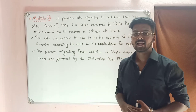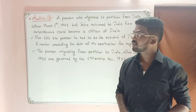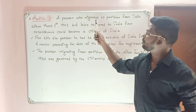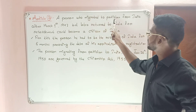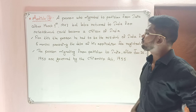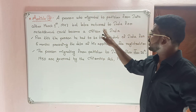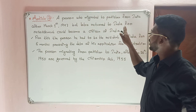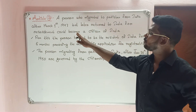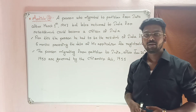Article number 7: A person who migrated to Pakistan from India after March 1st, 1947, but later returned to India for resettlement could become a citizen of India.